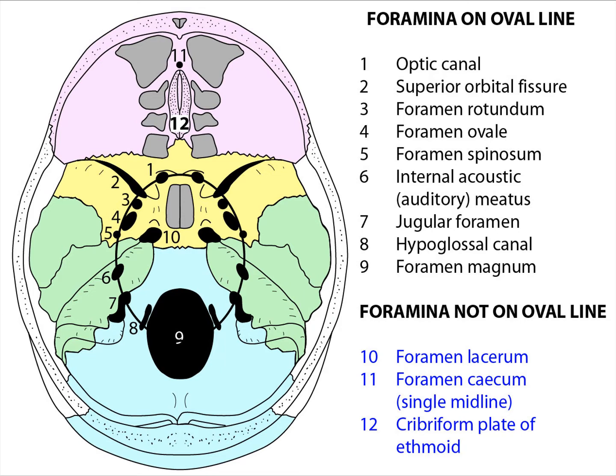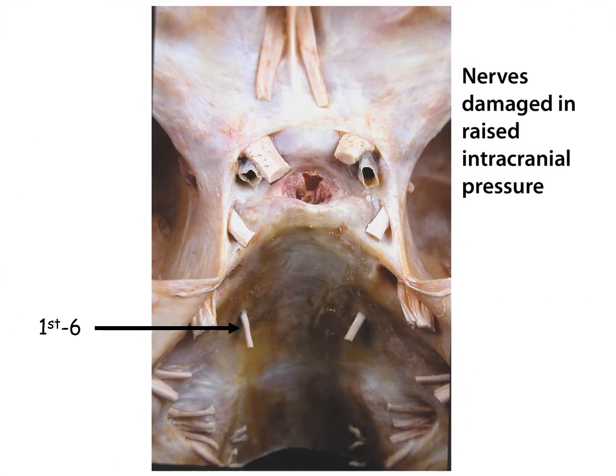Number eleven is the foramen cecum, a single midline foramen, which is the site of the beginning of the superior sagittal sinus, and sometimes has an emissary vein passing through it. Lastly, we have the cribriform plate of the ethmoid, number twelve, through which the olfactory nerves pass, surrounded by small stems of dura to reach the nasal cavity. Also passing through the cribriform plate are the anterior ethmoidal artery and nerve.